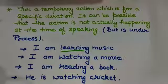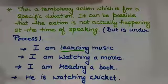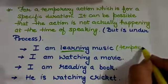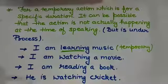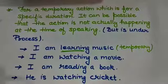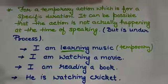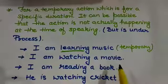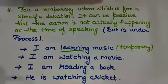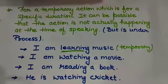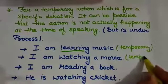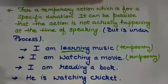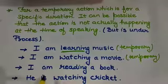It will end in a specific time. So I am learning music is showing us a temporary action and hence we use present continuous with it. Now, let us see one more example to clear the concept. I am watching a movie. See, the movie will be finished in a specific time. If it is a three-hour movie or a two-hour movie, it is going to end. So this is again a temporary action and we need to use present continuous action.